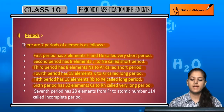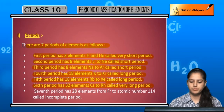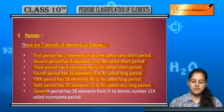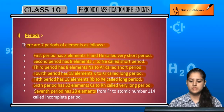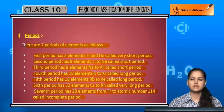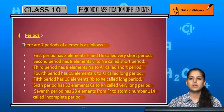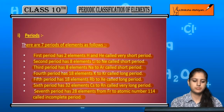The sixth period has 32 elements, from cesium to radon, and is called the very long period. The seventh period has 28 elements, from francium to atomic number 114, and since it is not yet complete, it is called the incomplete period.